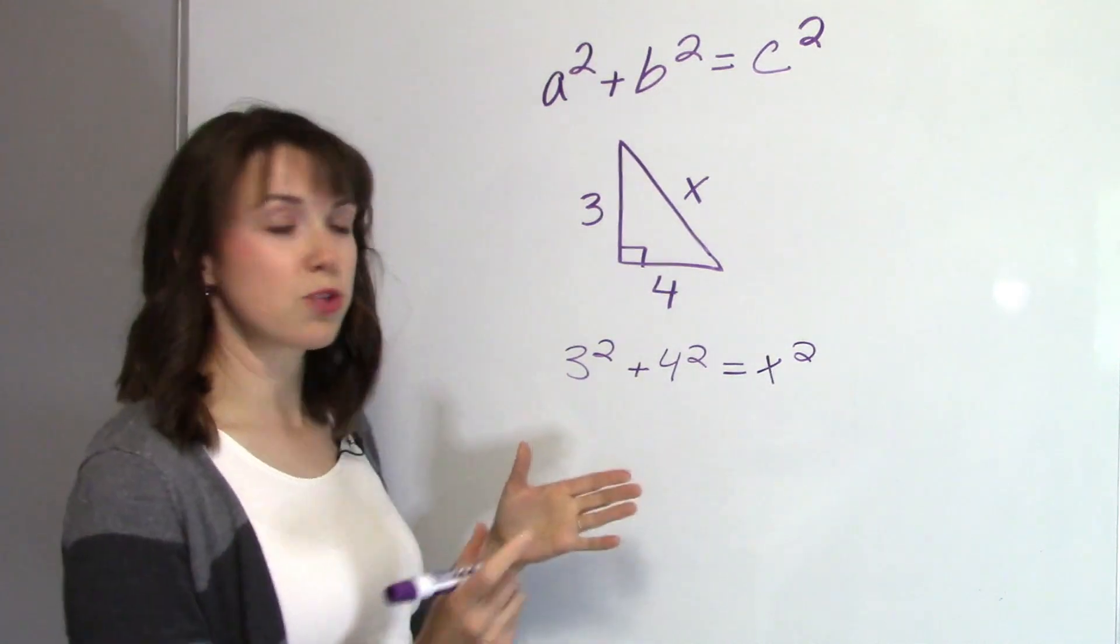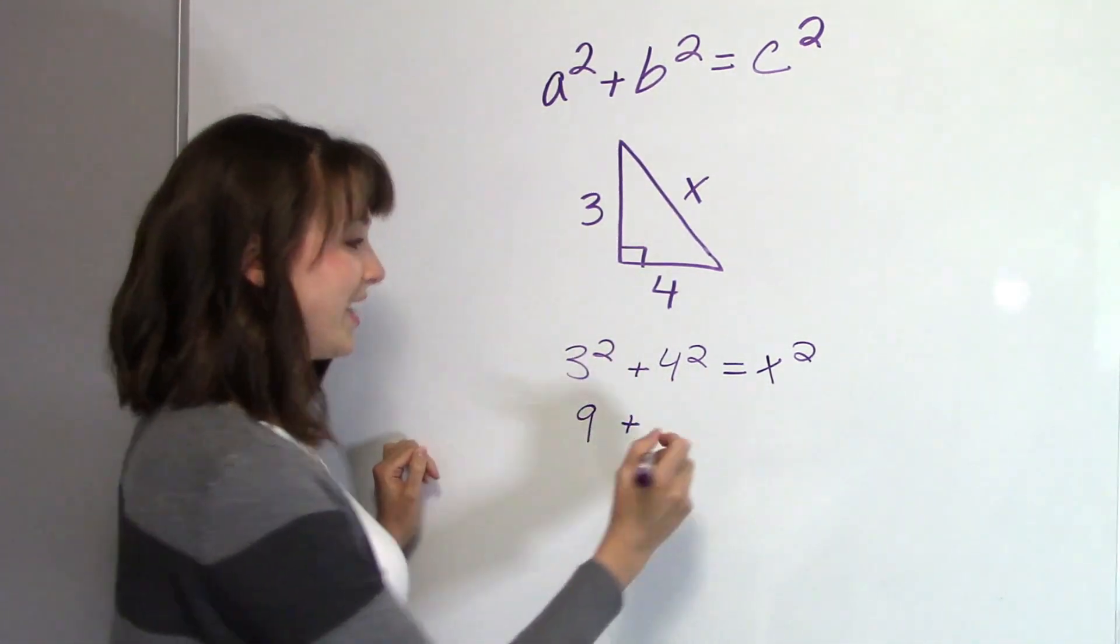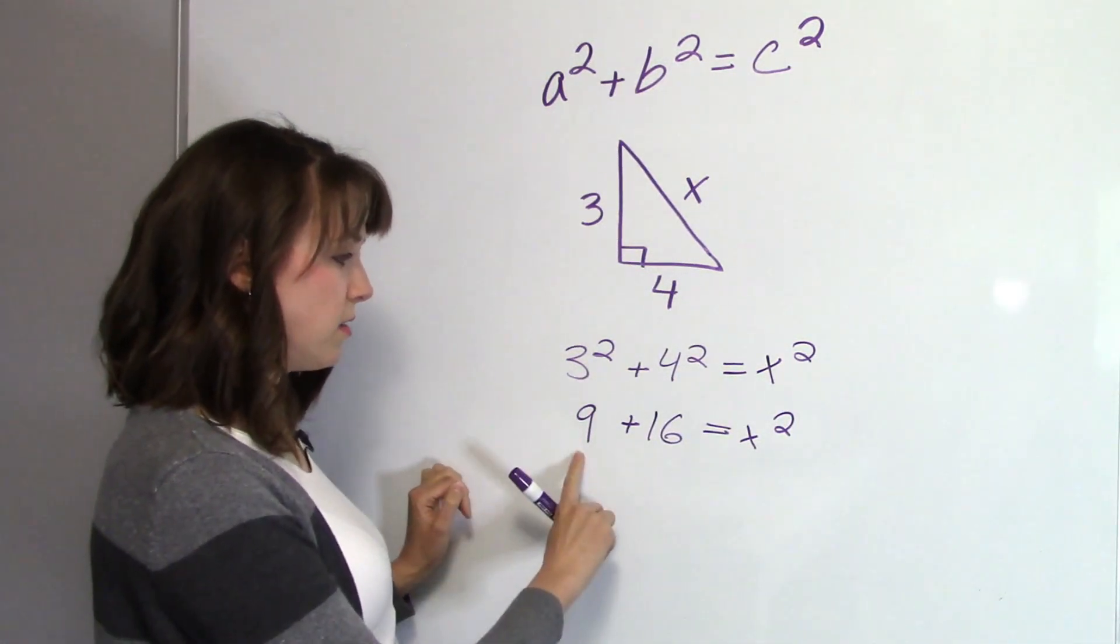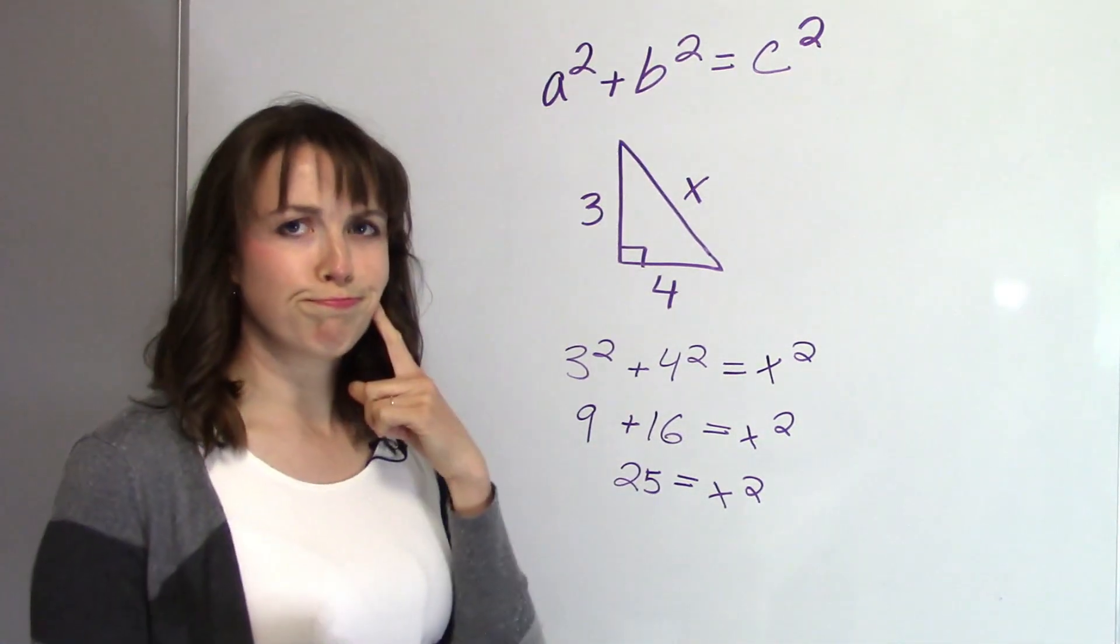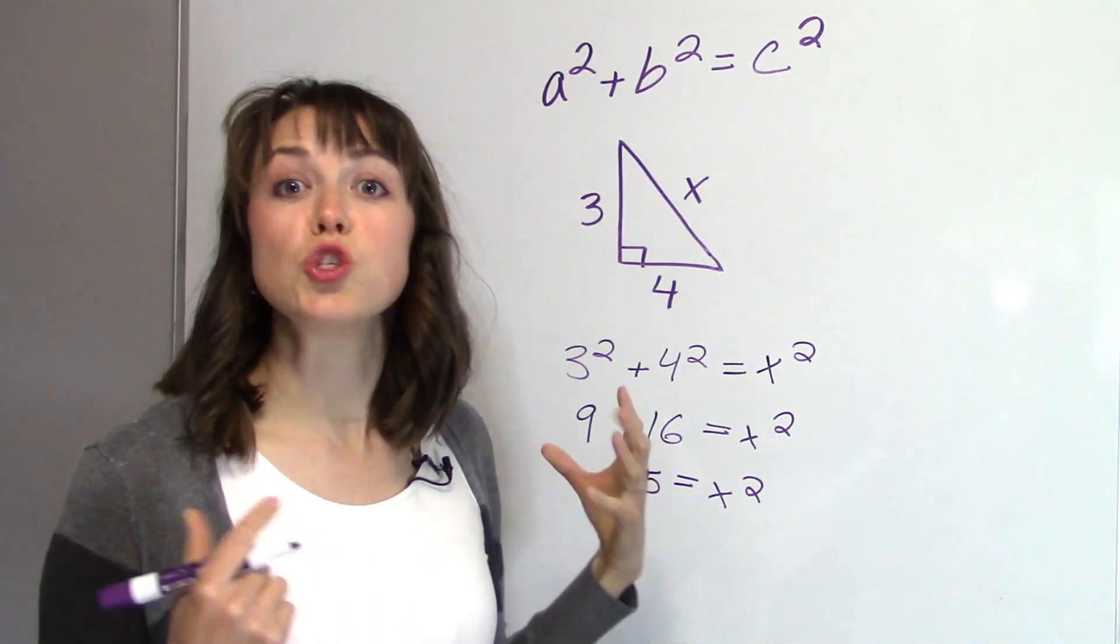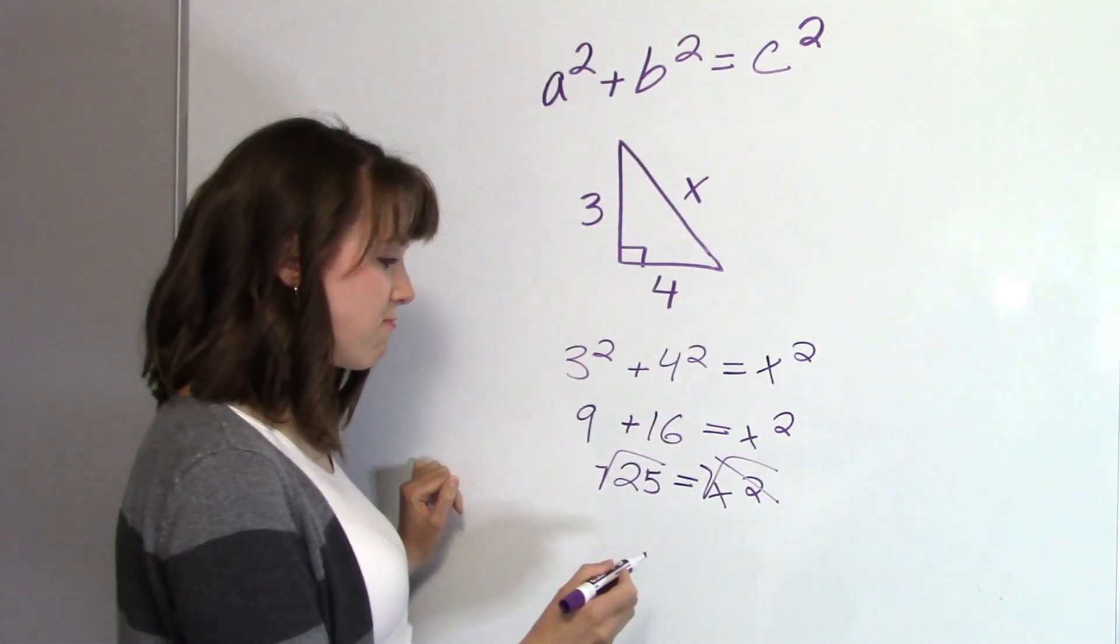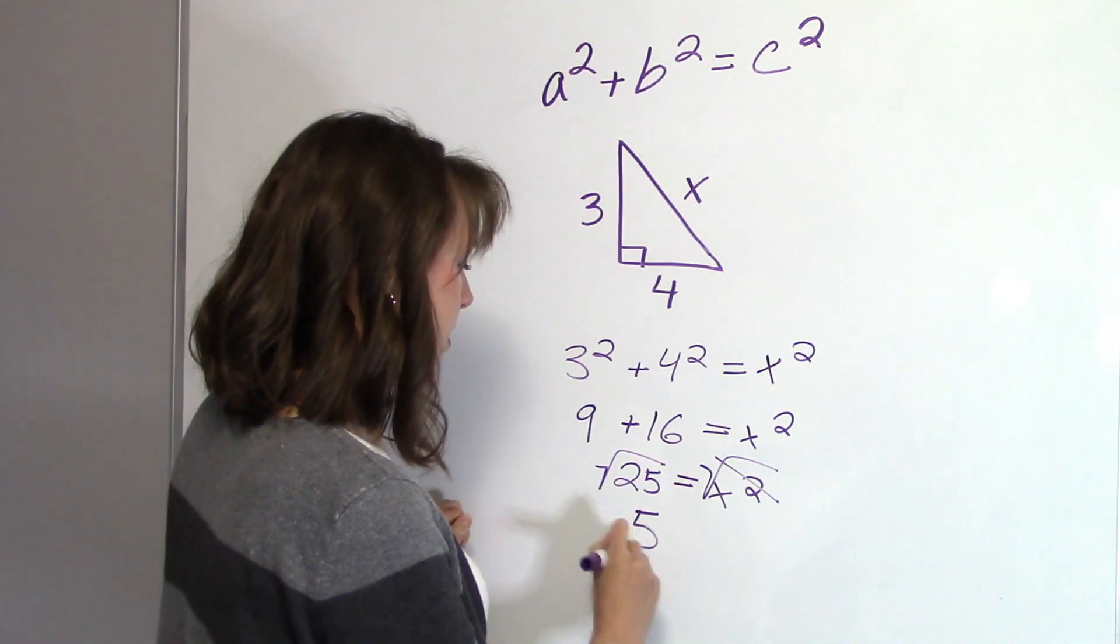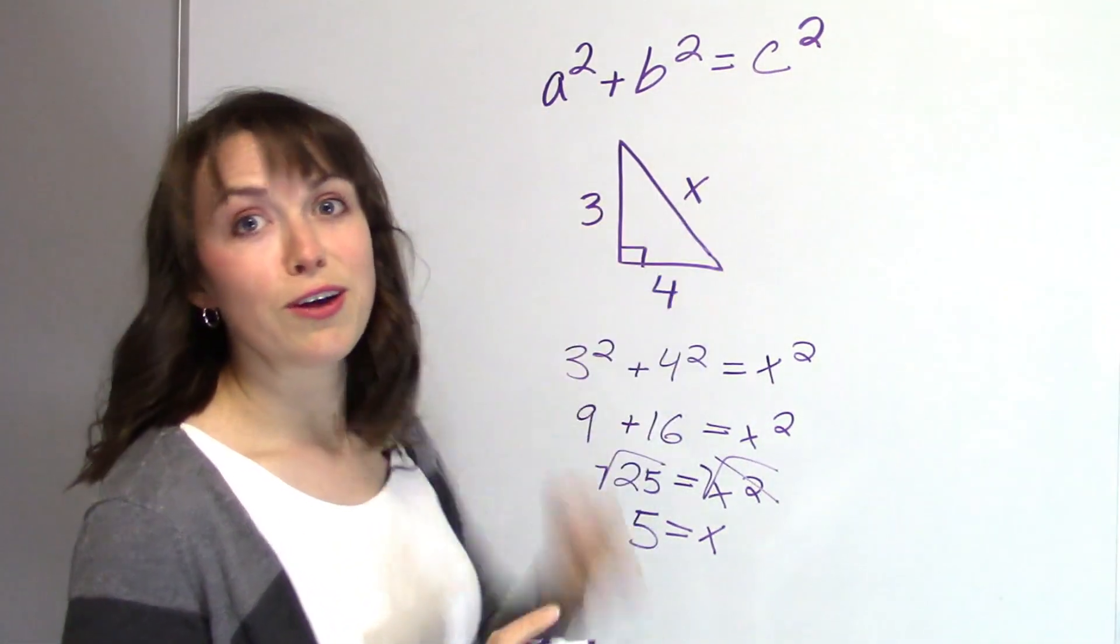So I called it X, but we could certainly call it C if you wanted to. So three squared is just three times three. So three times three is nine plus four squared. Four times four is 16 equals X squared. Now, nine plus 16 is 25 equals X squared. How do we get it from being X squared to just X? Basically what we have to do is we have to take the square root, so we can take the square root, which I'll cancel that out. And the square root of 25, and I know that a number times itself that equals 25 is just going to be five. So five equals X, which is the hypotenuse right there, the C in the equation.